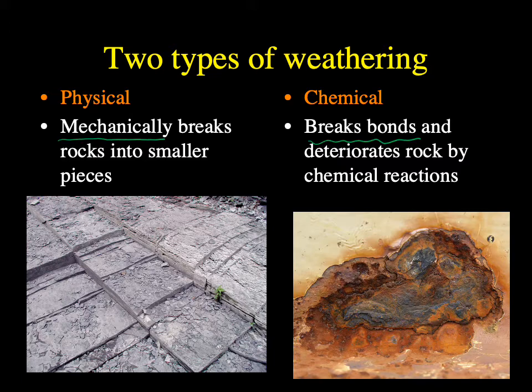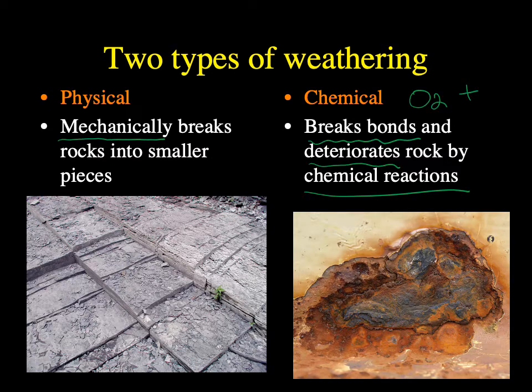In chemical weathering, bonds between atoms break, stretch, or change so that the rock deteriorates by a chemical reaction. The two biggest agents for chemical weathering reactions are going to be oxygen and water. Let's look at physical weathering reactions first.